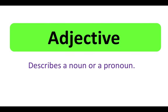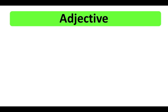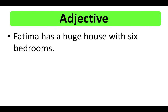An adjective describes a noun or a pronoun. For example: short, beautiful, red, old. Fatima has a huge house with six bedrooms — the adjective in this sentence is 'huge,' because it is describing Fatima's house.